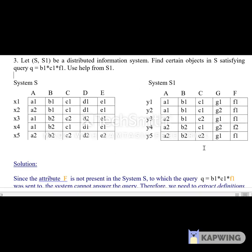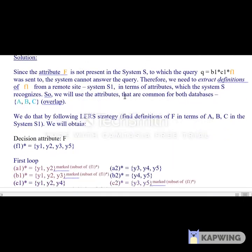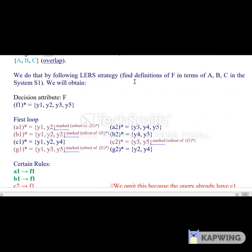The attributes that overlap in both systems S and S1 are A, B, and C. We use the LERS strategy to find the definition of F in terms of A, B, and C in system S1. If you remember the LERS strategy, we first find the objects that satisfy the decision attribute.